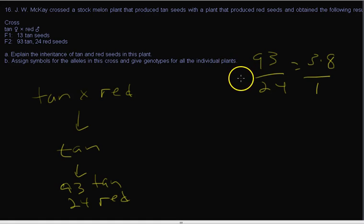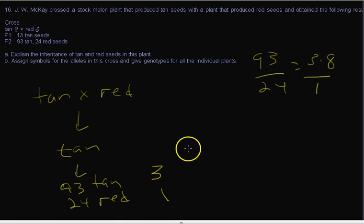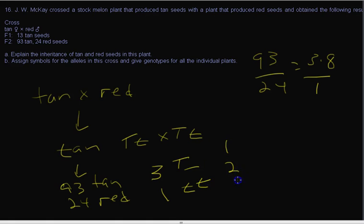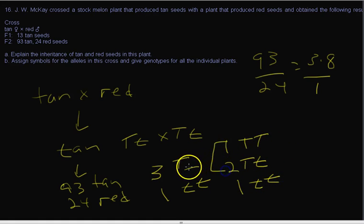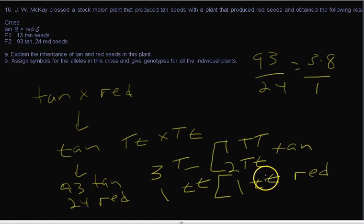We'll think about using a chi-square test to see if these numbers really fit. For this cross, we're going to say it looks like a 3 to 1, meaning it's a monohybrid cross — two monohybrids crossed together — giving us three that look like one type and one that looks like another. The full genotypic ratio combines the heterozygotes to give you the three, and the homozygous recessive gives you the one. These are all tan; these are red.